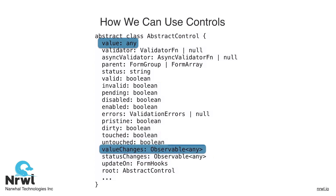Closely related to value is the valueChanges observable stream. This is an observable of type any that changes as the form control changes. At any time the value changes, we can expect the observable will emit an event containing the new value. The other piece we'll touch on is the updateOn strategy. This strategy dictates when the value change events are emitted. By default this is every keystroke, but we can set it to only emit on blur for the corresponding element, which can be very helpful when that is the desired behavior.